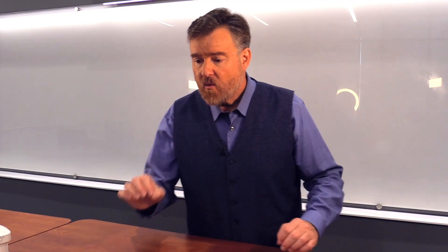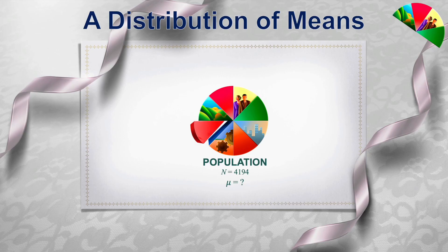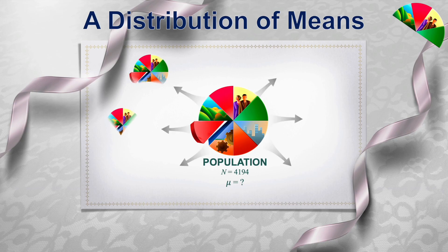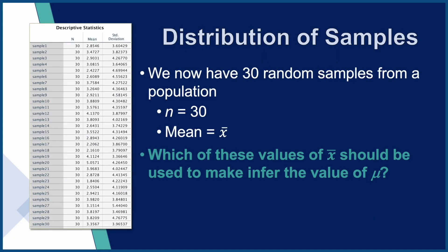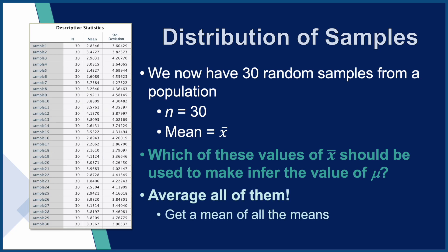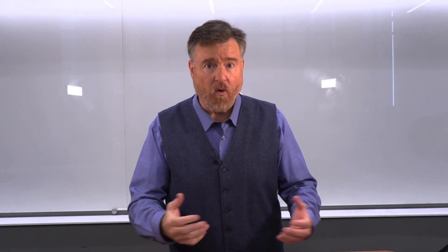Let's review this data set. We started with a population size of 4,194. Everyone in class did an example of choosing randomly 30 patients from that population. Assuming 30 students in the class, we would have 30 random samples from the same population, each with the same sample size of 30 and a mean of x-bar. Which of these values of the sample mean should we use to estimate the population? We're not going to choose just one — we want to average all of those means and use the mean of the means as our estimator for the population value.